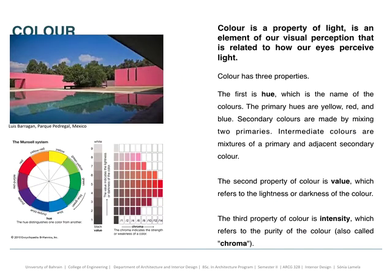Another important element is color. We can only see color because we have light — light is what makes color possible for us to see. Color is a property of light; it's an element of our visual perception and it's related to how we perceive light in our eyes. We will have one full lecture all about color. Right now, the main thing to know is that color has three properties: the hue, the value, and the intensity — also named chroma. With those three properties we can create a range of different color schemes for our interior design projects and architecture.